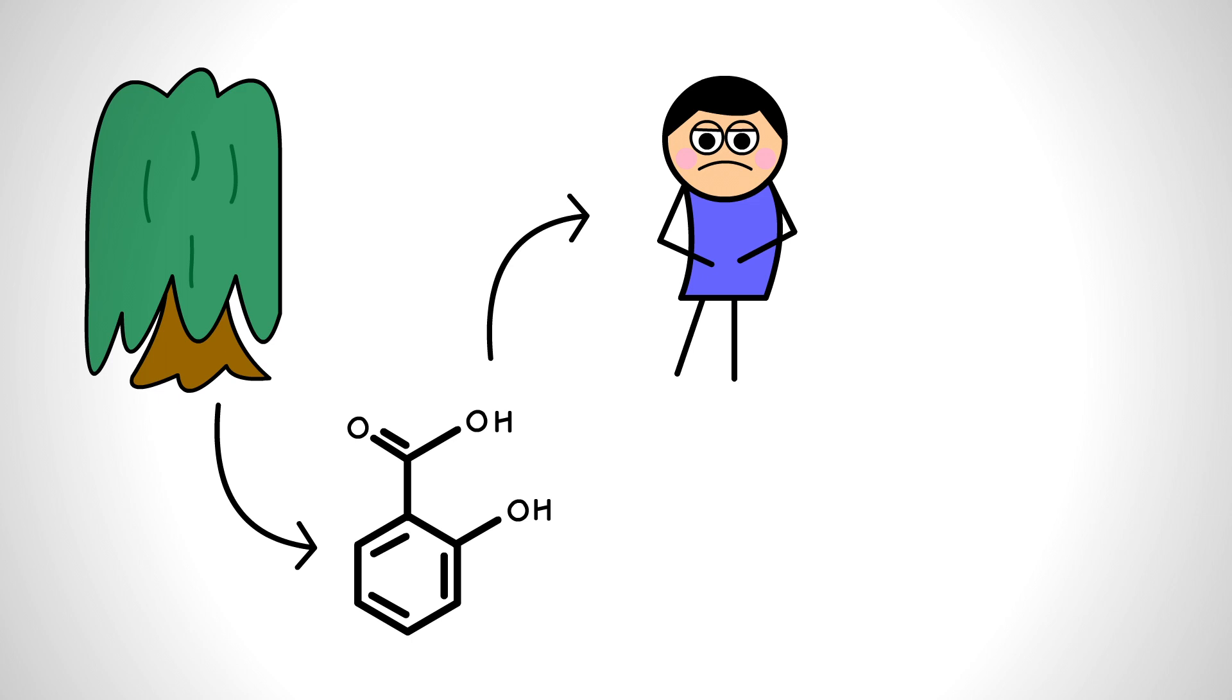Physicians used slight variations of this compound to experiment on and treat patients, with varying efficacy and some serious side effects. It wasn't until the late 1890s that acetylsalicylic acid was found to be easily synthesizable, efficacious, and less irritating to the patient. You might know this drug better as aspirin.